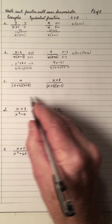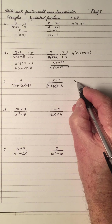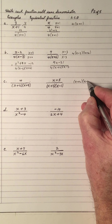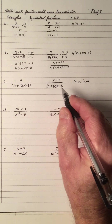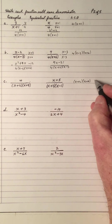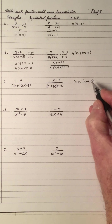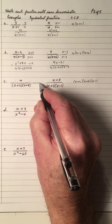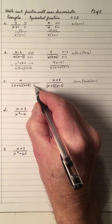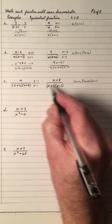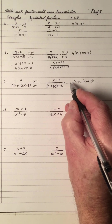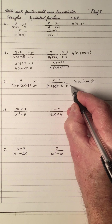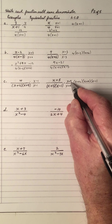The LCD — I need an x plus 9, and I need an x minus 1. So what do I need to multiply this fraction by? To give me this, I need an x minus 1 — top and bottom. What do I need to multiply this one by? I need an x plus 9, because that's what I'm missing — but I've got to do it top and bottom.